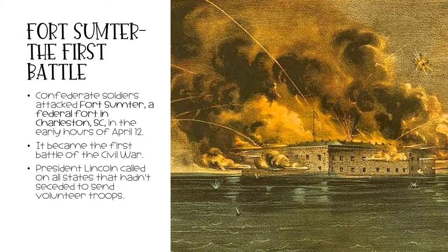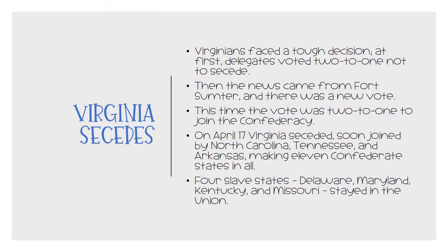On April 1st, 1861, Confederate soldiers attacked Fort Sumter, a federal fort in Charleston, South Carolina, in the early hours of the morning. It became the first battle of the Civil War. Afterward, President Lincoln called on all states that hadn't seceded to send volunteer troops. Virginians faced a tough decision. At first, delegates voted 2-1 not to secede. However, news came from Fort Sumter, and they heard President Lincoln's request, and there was a new vote. This time, the vote was 2-1 to join the Confederacy. On April 17, 1861, Virginia seceded, soon joined by North Carolina, Tennessee, and Arkansas, making 11 Confederate states in all. Four current slave states — Delaware, Maryland, Kentucky, and Missouri — stayed in the Union.